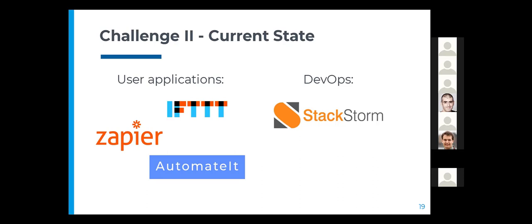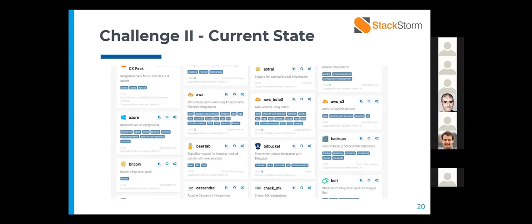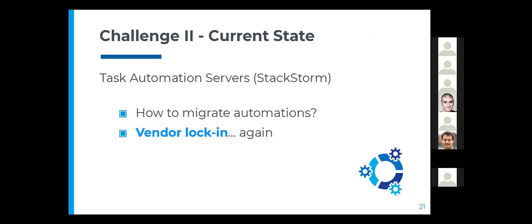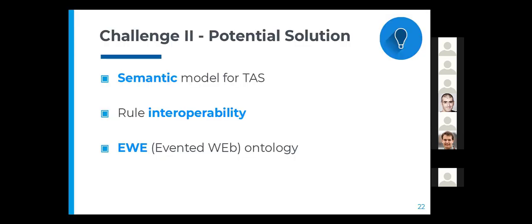There are many commercial examples of task automation servers in the world of user applications, like IFTTT, Zapier, or Automate — you might have heard about them. In the DevOps field, the most relevant TAS right now is TagStorm. However, with task automation servers like TagStorm, we face the vendor locking problem again. The infrastructure becomes dependent on the TAS being used because all automated tasks defined are only available for that particular TAS. A potential solution would be to define a semantic model for task automation servers, enabling rule interoperability between them so automations built for one TAS could work in all of them.